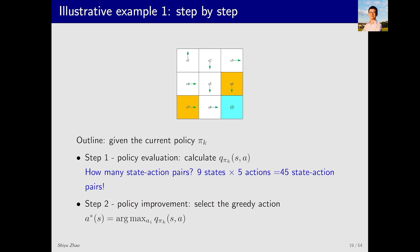Similar to policy iteration, MC Basic consists of two steps: policy evaluation and policy improvement. In policy evaluation, we need to compute Qπk(S,A) for all states S and all possible actions A. In our example, we have nine states and five actions per state, totaling 45 state-action pairs.